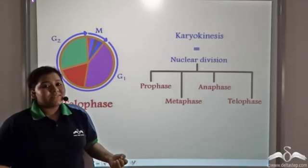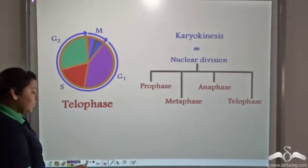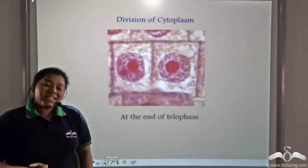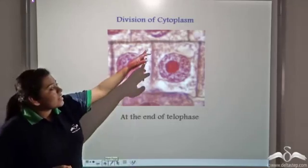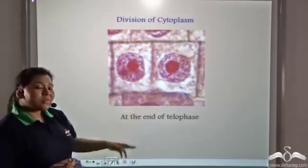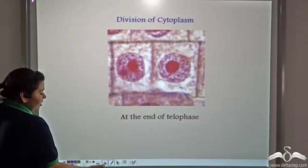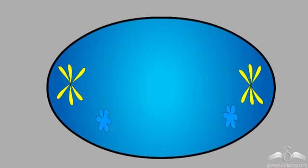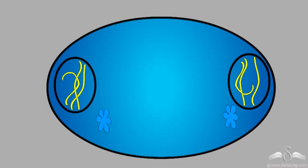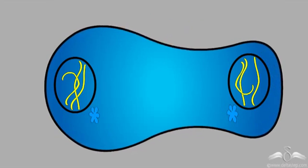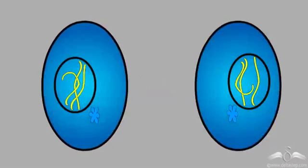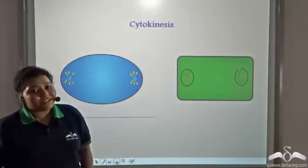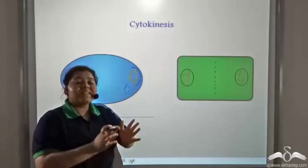At the end of telophase, the cytoplasm starts dividing. How does it divide in a plant or in an animal? Cytoplasm furrows in the animal cell forming two new daughter cells. This process is known as cytokinesis, where cyto comes from the word cytoplasm and kinesis means division.